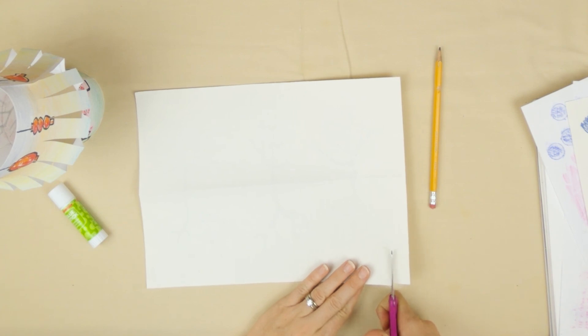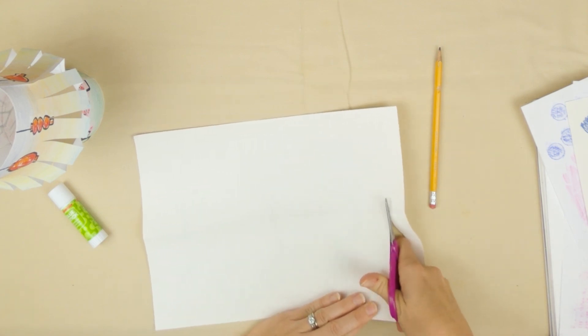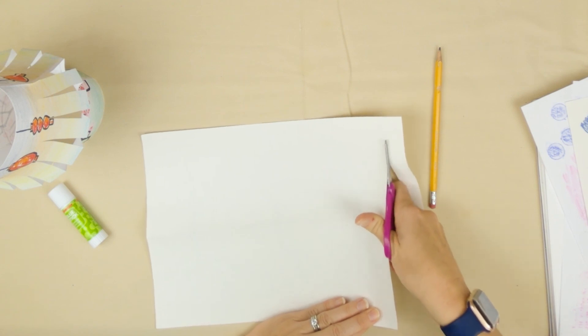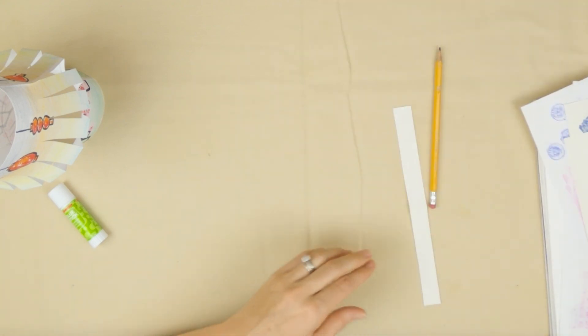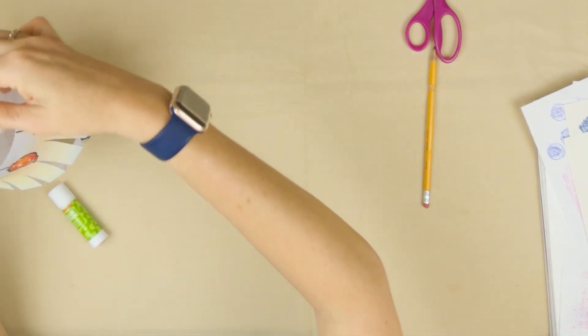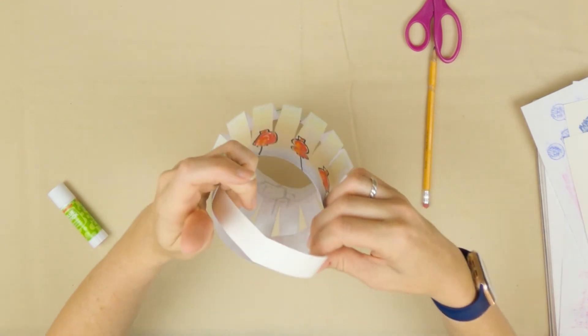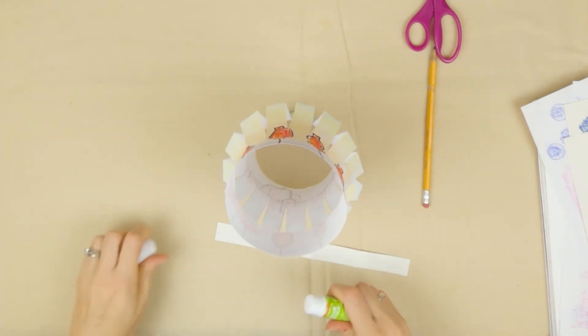I'm going to just take my scissors and cut a strip of paper off. We're going to glue that on as a handle. I'm going to put glue on both ends.